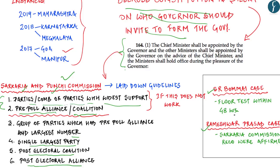In the Rameshwar Prasad case of 2005, the court ruled that there was nothing wrong in installing a post-poll combination, and that the governor could not decline the formation of a government on the ground that it was being done through unethical means. These are the two extremely relevant court judgments as far as the discretionary power of the governor is concerned.